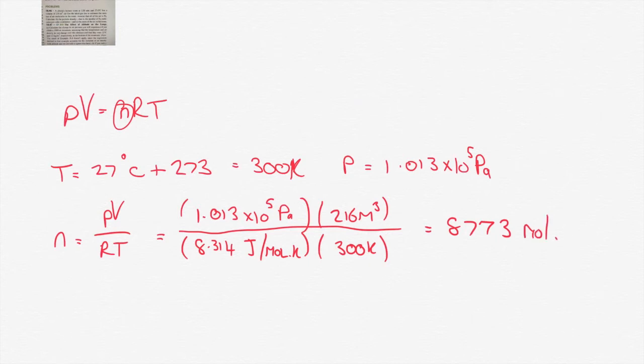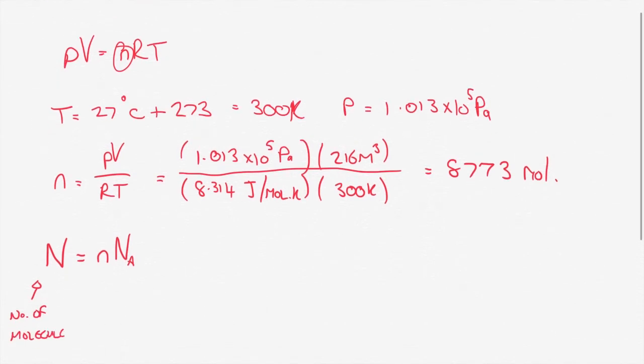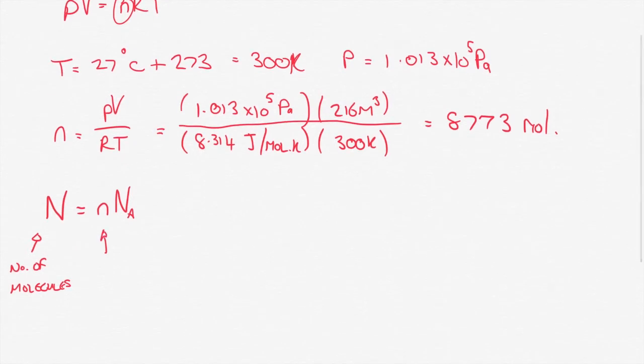So that's just the number of moles in the room. What we're really interested in, or what the question asks us for, is the number of molecules in the room. So in order to make that conversion, we write N equals n times NA, which is a really useful equation, but a slightly confusing one. And you do run into this problem in physics quite a lot, where the notation tends to repeat itself. So what do we mean by N equals n times NA here? Well, the capital N that we're solving for is the number of molecules in the room. The small n is the number of moles in the room. So big N means number of molecules, small n means number of moles, and then NA means Avogadro's number. So all we're saying here is that if we want to find the number of molecules in the room, we just multiply the number of moles by Avogadro's number.